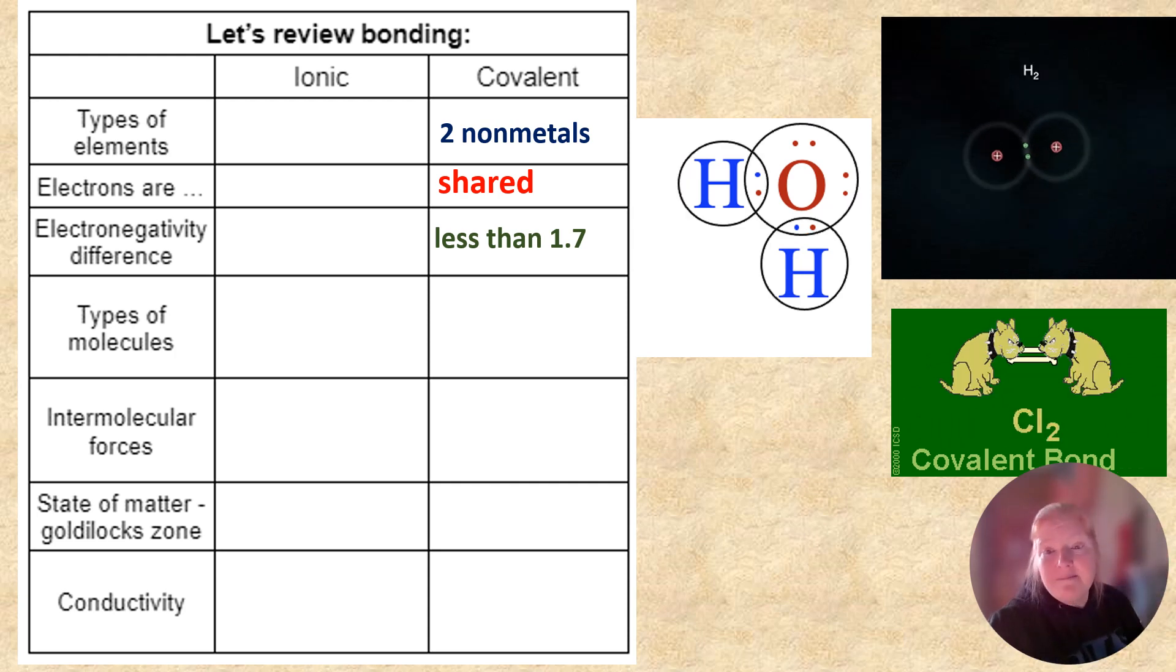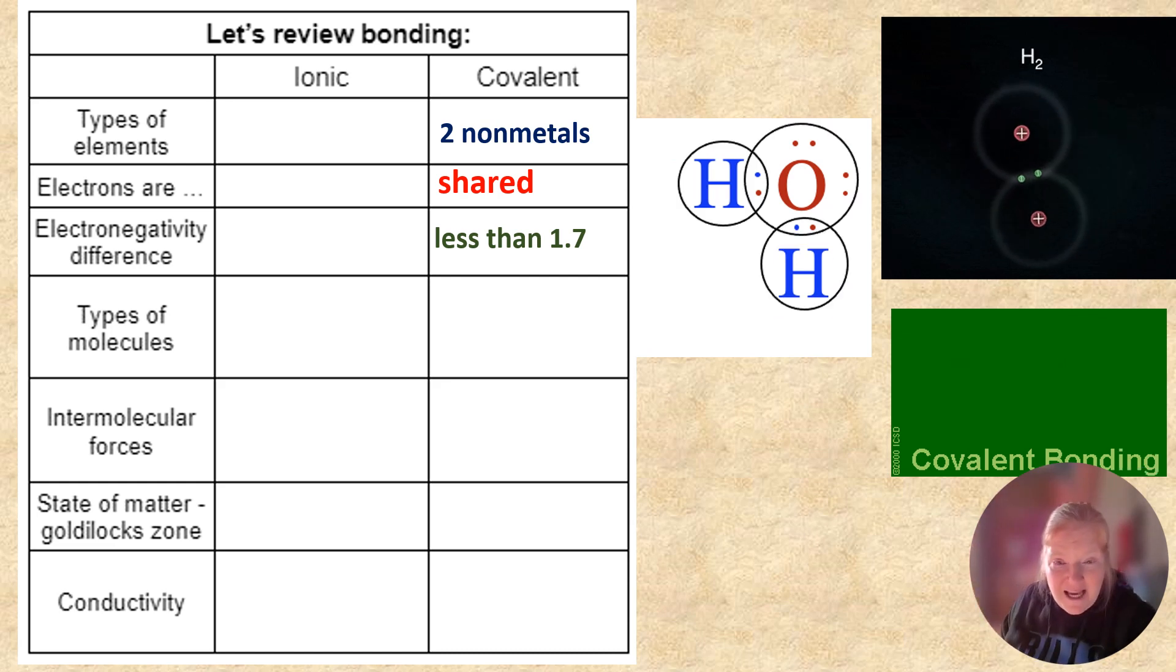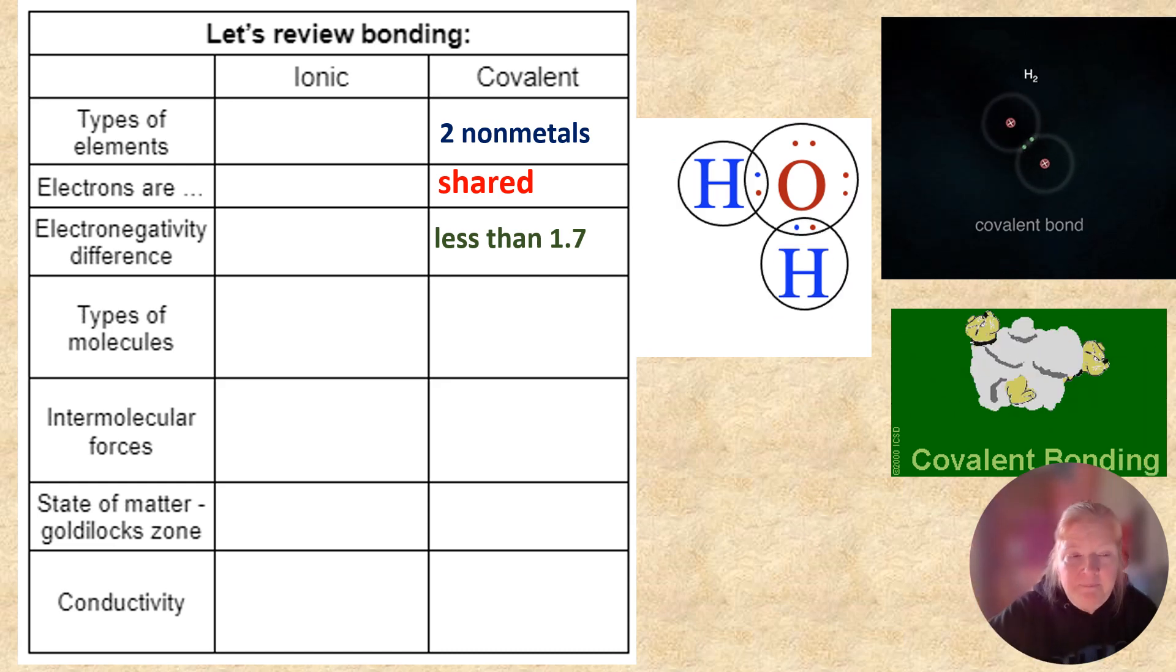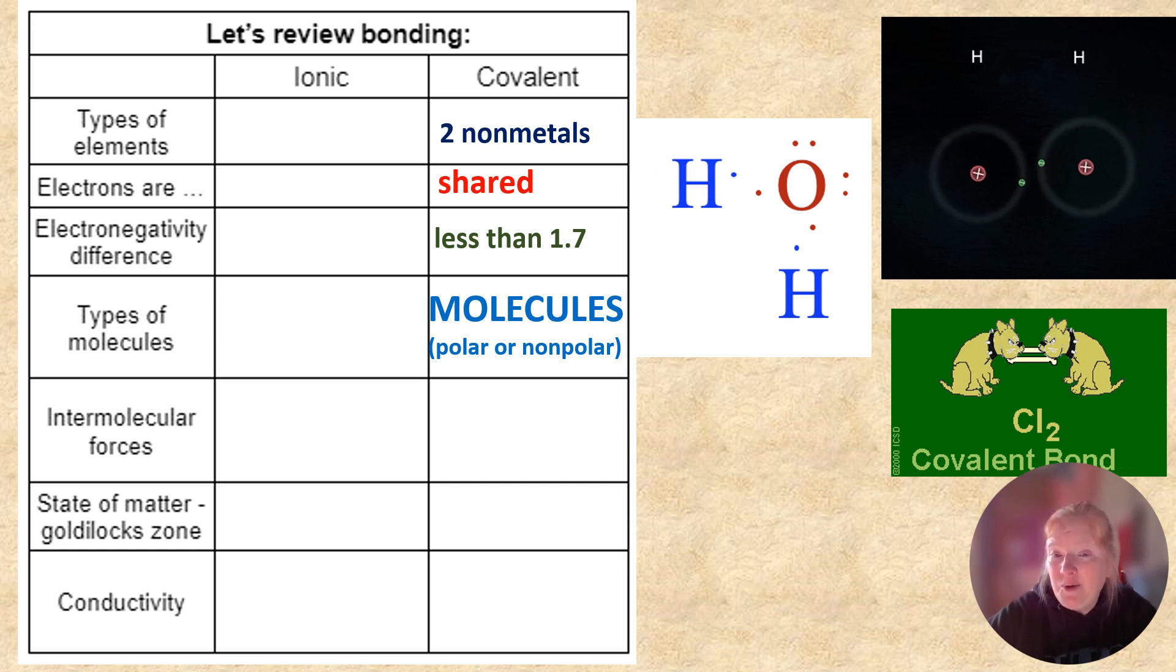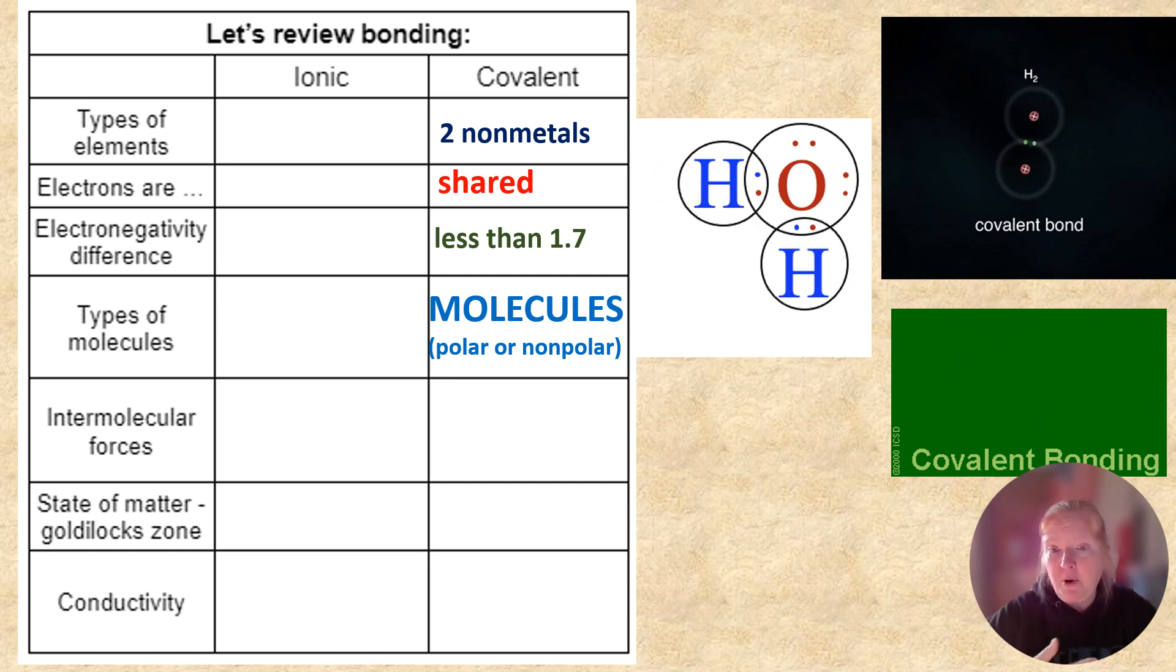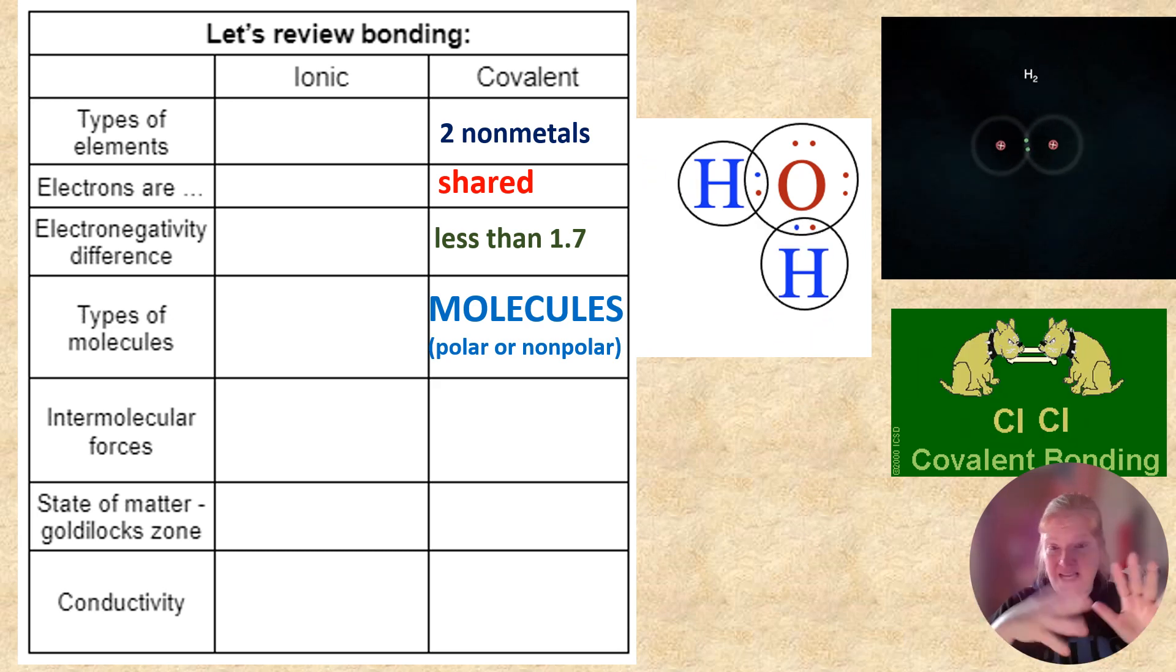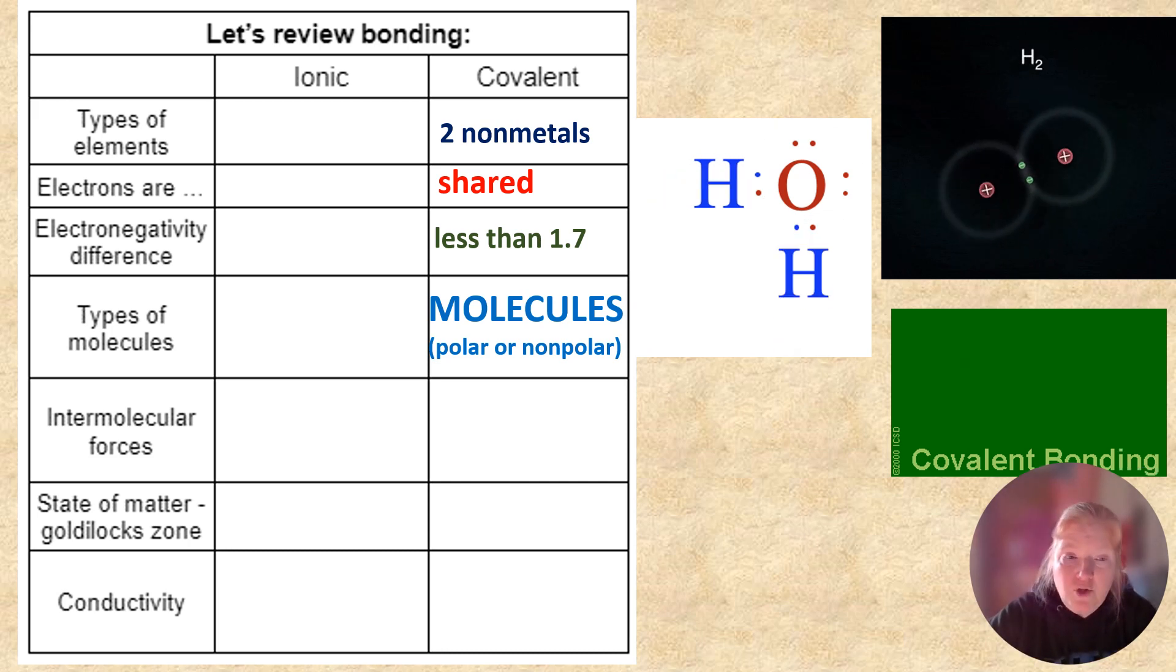Closer to zero is more nonpolar. Closer to 1.7 is more polar. So we have molecules. And the molecules can be either polar or nonpolar. So they're polar if they have no symmetry, so the charge is not distributed equally. Or they're nonpolar if they do have symmetry.